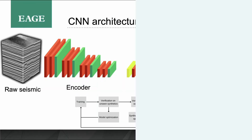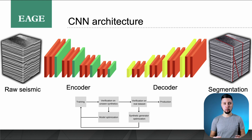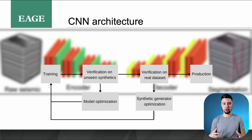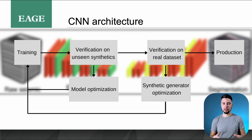In geophysics, a variety of neural network platforms have been applied. Today I'm going to share the U-Net architecture, which consists of an encoder-decoder structure. The network takes raw seismic data as input and outputs fault segmentation. Fault delineation is treated as a binary segmentation problem. Neural network training goes through several stages: first, we train it on the synthetically generated dataset, then we verify results on an unseen dataset. If results are not satisfactory, we go back to the optimization stage, adjusting the architecture and weights to improve performance.